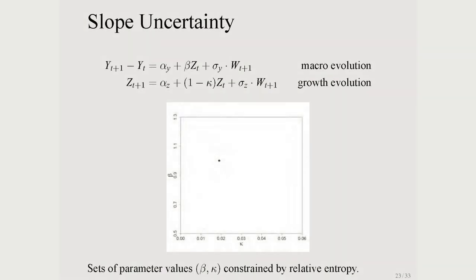Here's my only equation. Y is some proxy for the overall macroeconomy — think of it as the logarithm of consumption. The growth rate is hit by random shocks W, and there's a Z process for the growth rate. The second equation gives a first-order autoregressive process for growth itself, so shocks to growth rates play out over time, consistent with those impulse response patterns. One way to go is to assume investors know parameters beta and kappa — that's consistent with the calculations I reported previously. We fit time series data, make our best guesses, and presume that's what investors know.